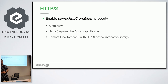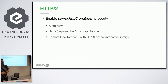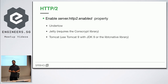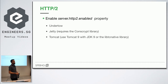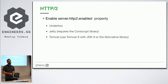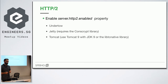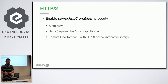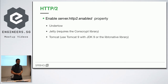HTTP/2: enabling HTTP/2 in Spring Boot 2 is quite easy — you just need to set the property server.http2.enabled in application.properties. On Tomcat, if you use Tomcat 9 with JDK 9 everything works fine because JDK 9 has HTTP/2 support. With JDK 8 you'll need to use a library passed as a JVM argument. The same applies to Jetty, which requires another library. For Undertow, everything works with JDK 8 and nothing extra needs to be configured. So it's quite straightforward to enable HTTP/2 support.